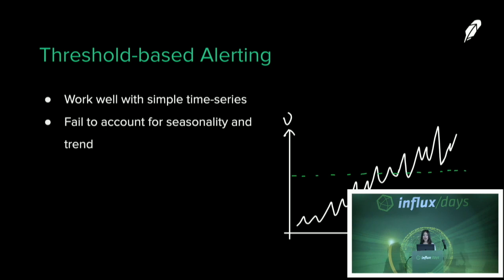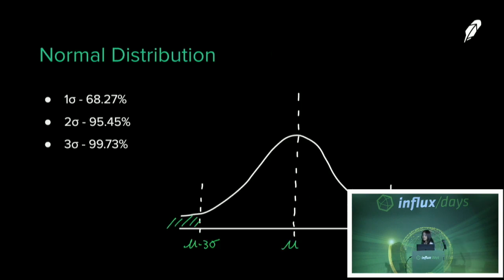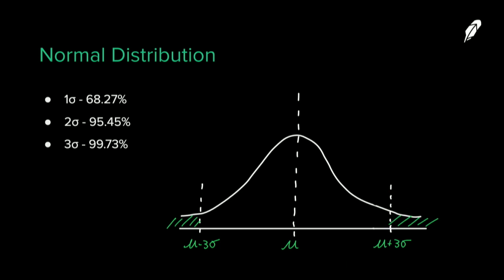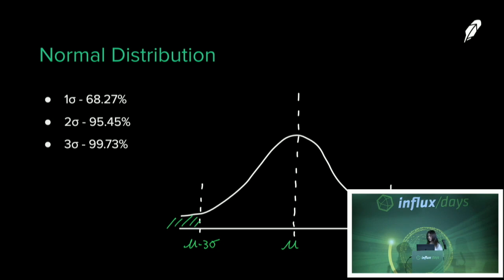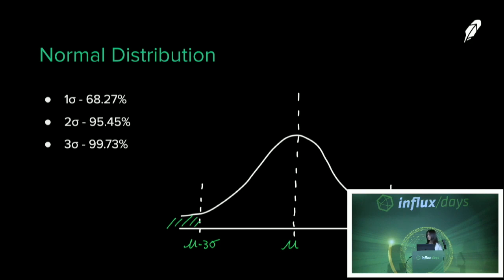The question we ask is: how can we fix this problem? How can we leverage historical data to define a reasonable dynamic threshold for anomaly detection? We found a concept from statistics called normal distribution. Given a list of data, you can compute the mean (mu) and the standard deviation. If we assume the underlying data is normally distributed, we have 99.7% confidence that data will lie within three standard deviations of the mean. We can leverage this idea when detecting anomalies in time series.